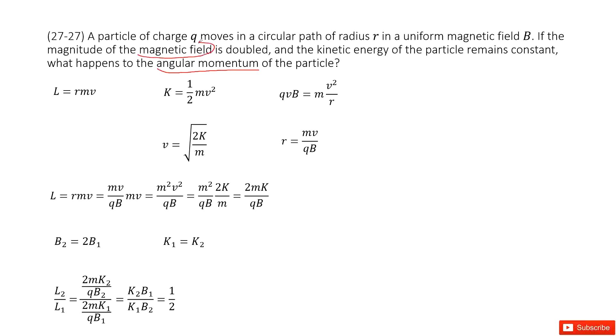It tells you how magnetic field changes and the kinetic energy changes. So it looks like we need to start from magnetic field and kinetic energy. So we can write down the kinetic energy as 1/2 mv squared.